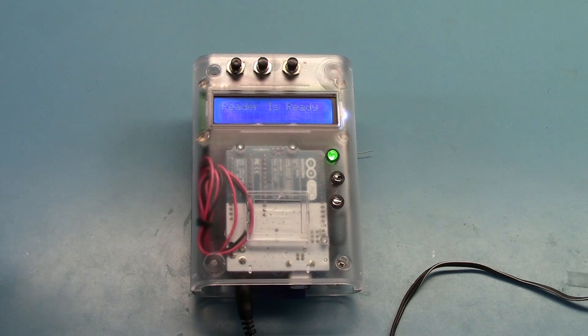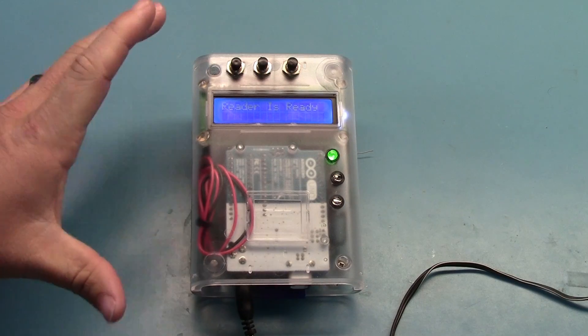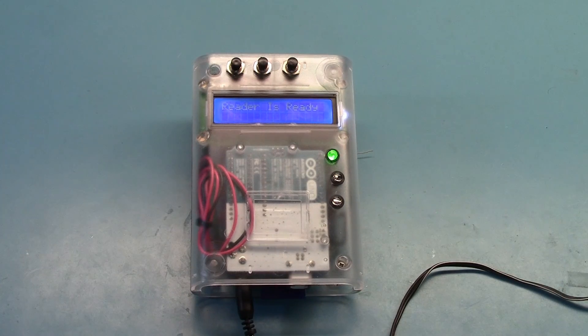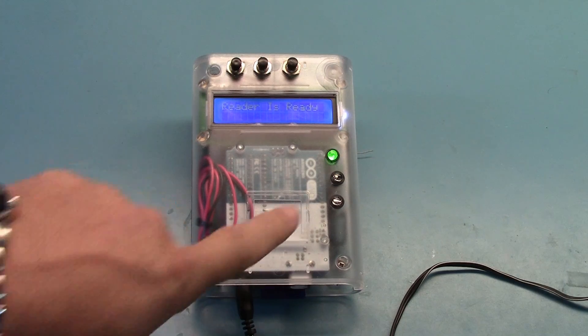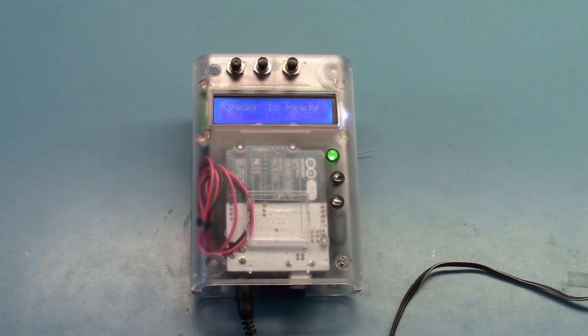Now the thought process is that we'll spend 90% of our time in a ready to read state. We're always just waiting for a card and then to do something. So at this point, if I take a card that is not in memory and I swipe it, it'll let us know card not valid, try another card, and it'll flash our red LED three times. And then it goes right back to a ready to read state.